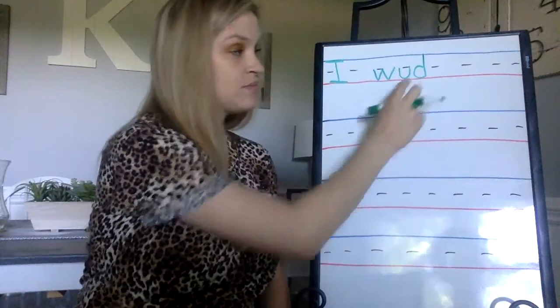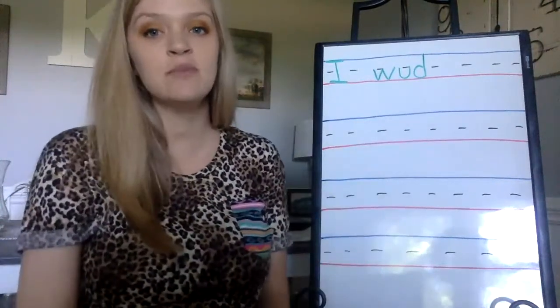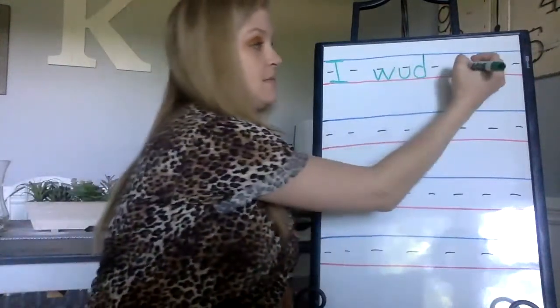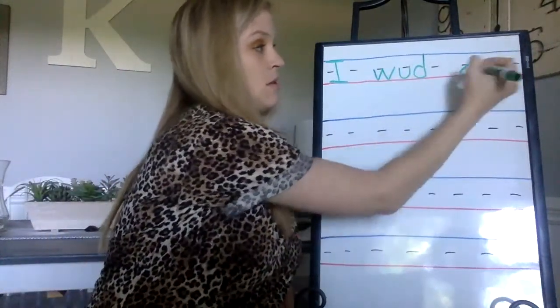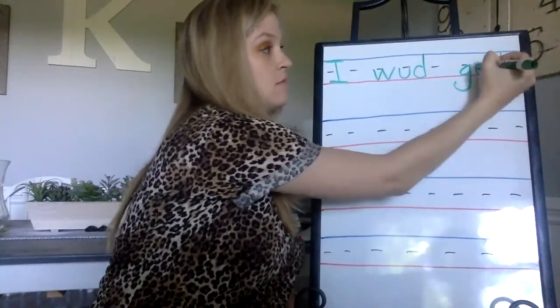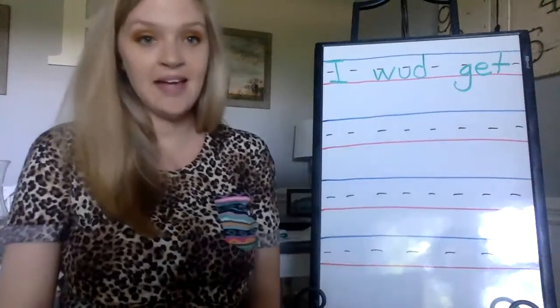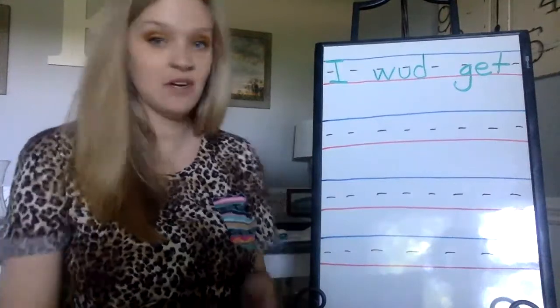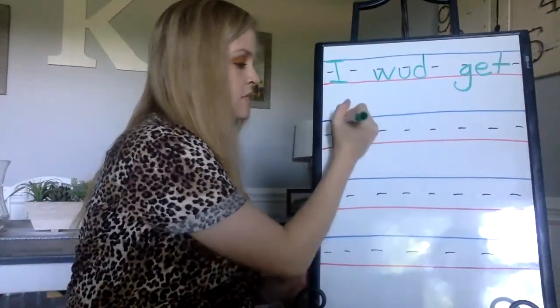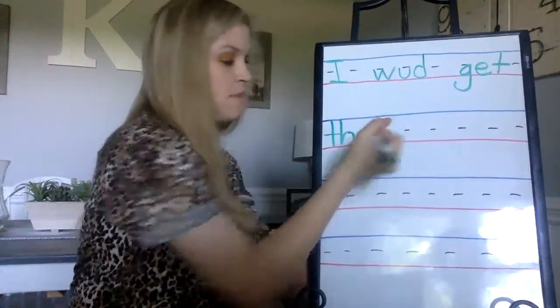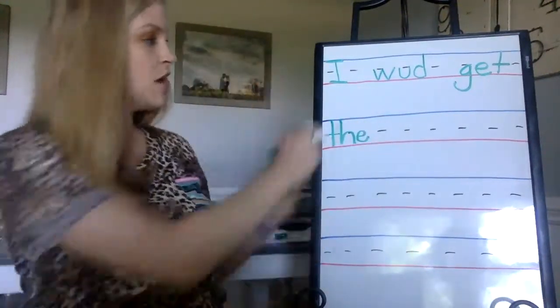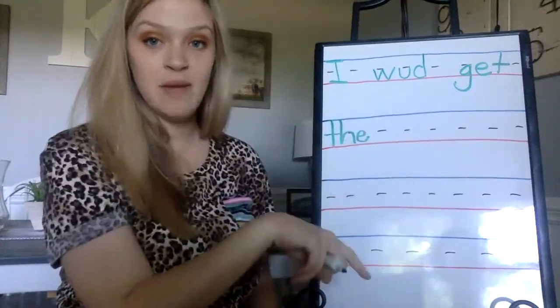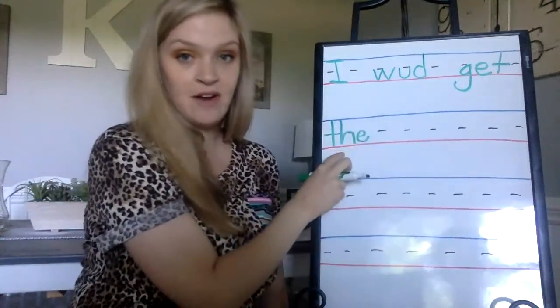I would get. Now get is one of our words that we should all know how to spell. Get is G-E-T. I would get the. And we know how to spell the because that's been one of our sight words. I'm going to come down here. Now look, make sure when you come to your next line that you're not writing in here. This is not a writing zone unless we have a letter that goes down into the basement. You're going to hop down to your very next line.